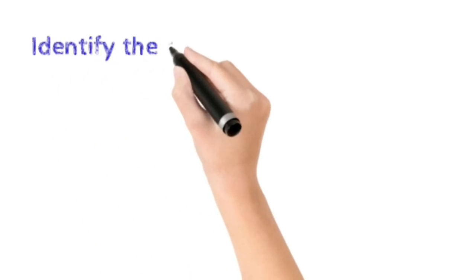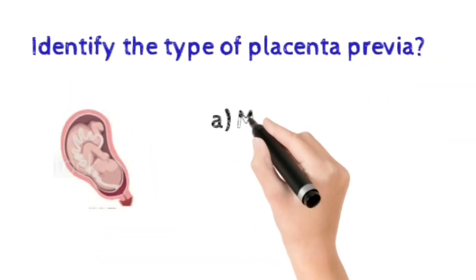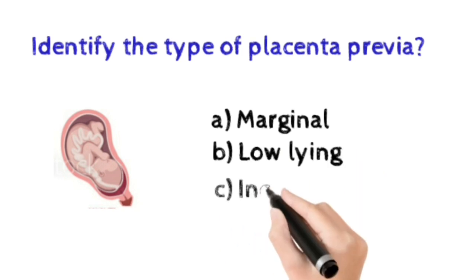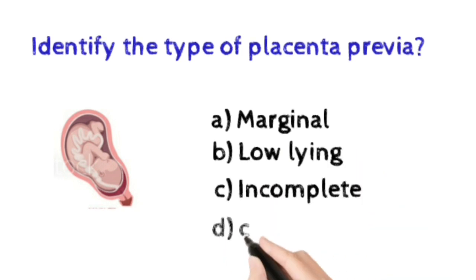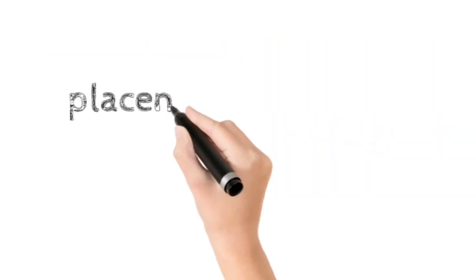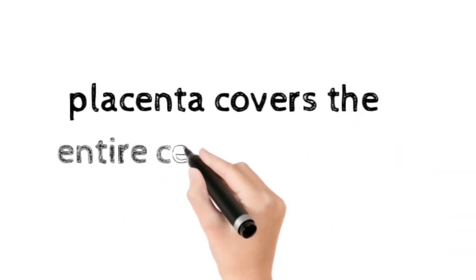Number five: identify the type of placenta previa. Option A: Marginal, Option B: Low lying, Option C: Incomplete, Option D: Complete placenta previa. The correct answer is complete placenta previa. In complete placenta previa, the placenta covers the entire cervical opening.